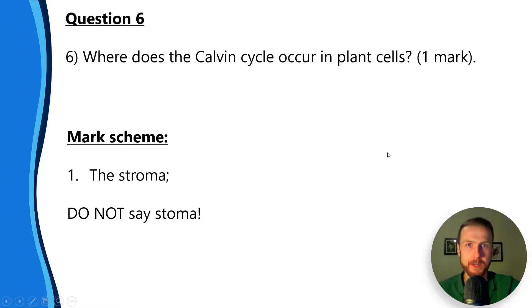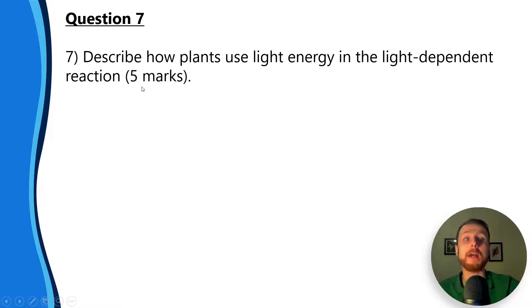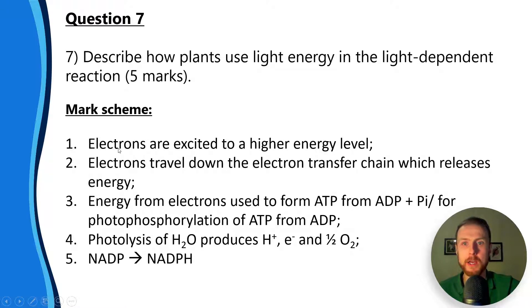Question seven: describe how plants use light energy in the light dependent reaction. Big question here, extended response. First mark: electrons are excited to a higher energy level. Next mark: electrons travel down the electron transfer chain which releases energy. Then energy from electrons is used to form ATP from ADP plus Pi. Four: photolysis of water produces protons, electrons, and half an oxygen molecule. Five: NADP is converted to NADPH.